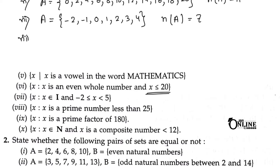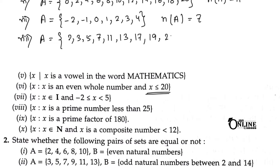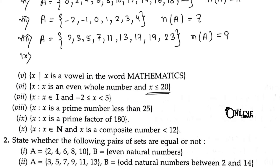Sum number 8: x is a prime number less than 27. It is definitely a finite set. The prime numbers are 2, 3, 5, 7, 11, 13, 17, 19, and 23. The cardinal number n(A) equals 9.